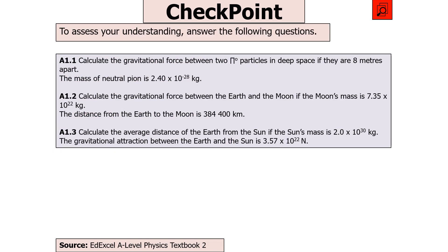The next question says: calculate the gravitational force between two pi-zero particles (mass 2.4 × 10⁻²⁸ kg) in deep space 8 m apart; then calculate the gravitational force between the Earth and Moon (Moon's mass 7.35 × 10²² kg, distance 384,400 km); then calculate the average Earth-Sun distance given the Sun's mass is 2 × 10³⁰ kg and the gravitational attraction is 3.57 × 10²² N. Pause the video now.